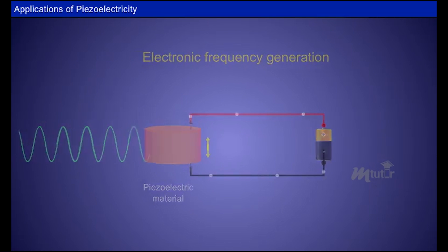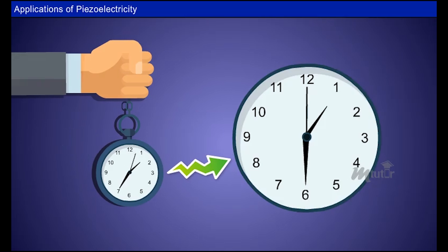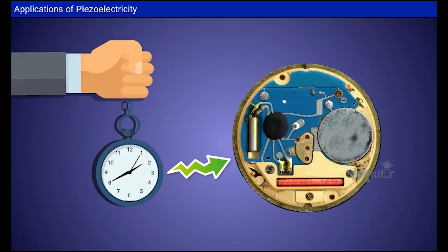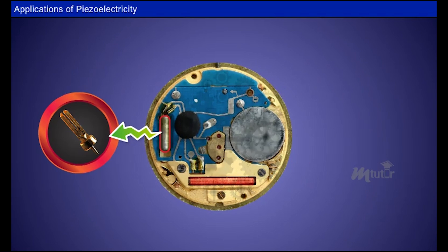Piezoelectric effect is applied in quartz watches, which use the piezoelectric quartz crystal. The movement of the watch depends mainly on the small piece of quartz crystal. The crystal is in the shape of a tiny tuning fork which vibrates 32,768 times per second.